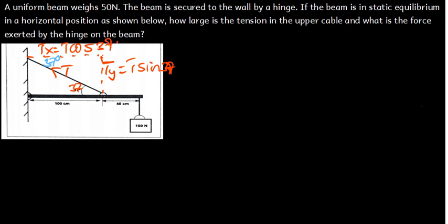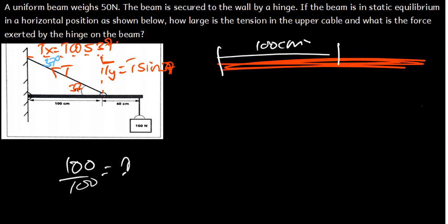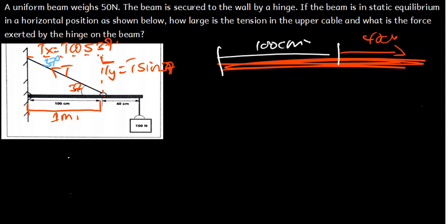Now we can work on the beam. The length of the beam: from this point all the way to here is 100 centimetres. Converting centimetres to metres by dividing by 100, 100 ÷ 100 = 1, so that distance is 1 metre. Then from here all the way to there is 40 centimetres, and 40 ÷ 100 = 0.4, meaning that distance is 0.4 metres.